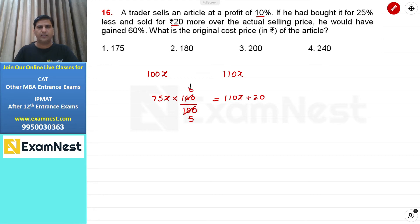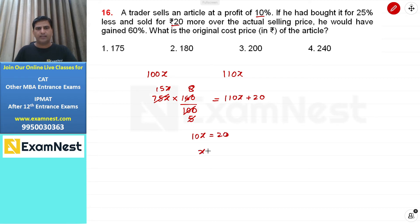New selling price = new cost price into 160% = 75x into 1.6 = 120x। Equation: 120x = 110x + 20, so 10x = 20, x = 2। Original cost price = 100x = 200 rupees, third option।